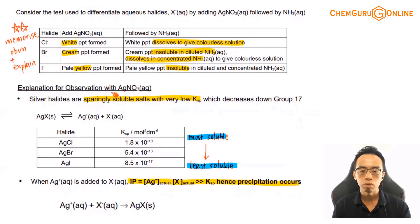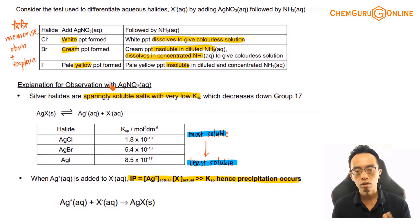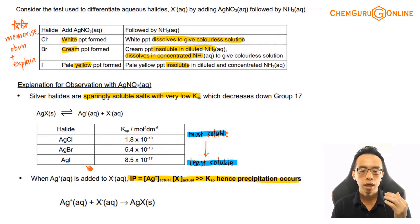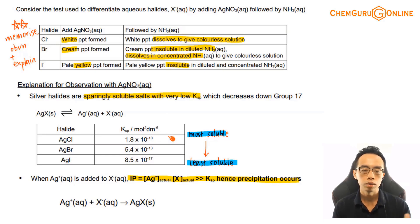The observation shouldn't be a problem, so let's talk about the explanation. Silver halides are sparingly soluble — their Ksp values are very low. We don't need to memorize the exact numbers, just keep in mind that silver chloride is the most soluble and silver iodide is the least soluble. When you add Ag⁺ from AgNO₃, the ionic product exceeds the Ksp for all of them, so precipitation occurs and all the precipitates form.